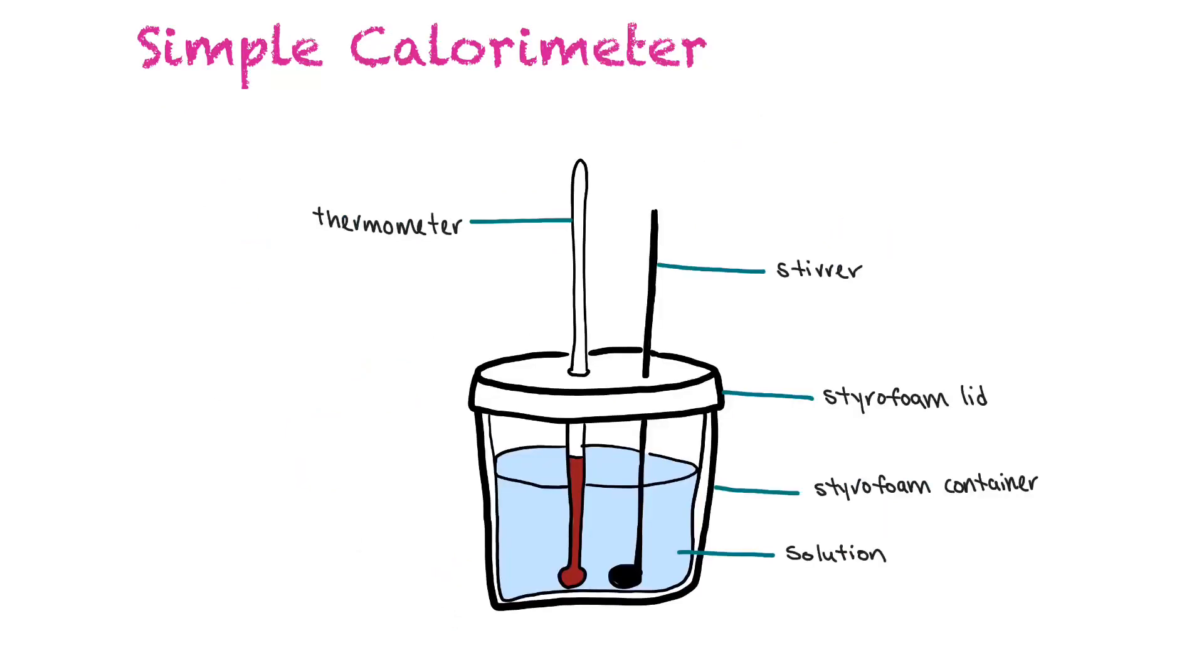This is an example of a simple calorimeter. You put your system in a styrofoam container to eliminate the loss of excess heat, and you insert a thermometer to measure the change over time. You have a stirrer, a styrofoam lid, a styrofoam container, and then a solution.